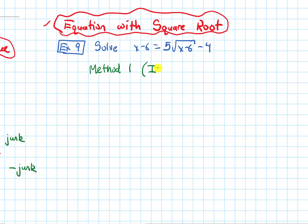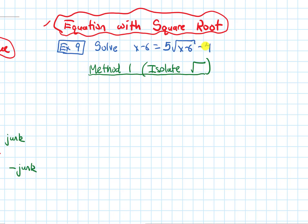Typically with a square root equation, we first want to isolate the root — that's what I'm going to call this method. So to isolate it, let's move this minus 4 term over to the left by adding it. That will give me x minus 2 equals 5 times the square root of x minus 6.